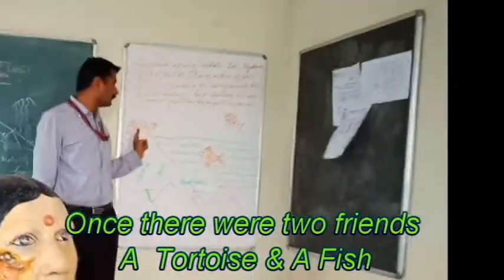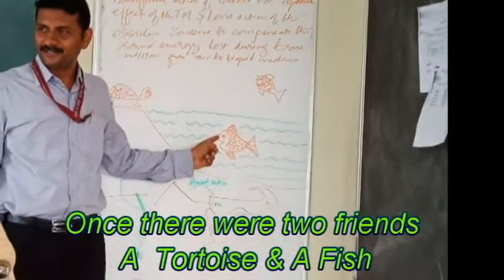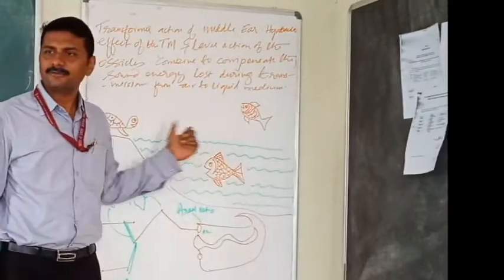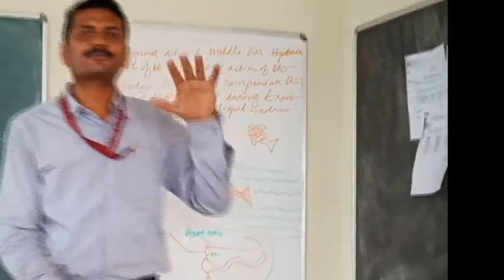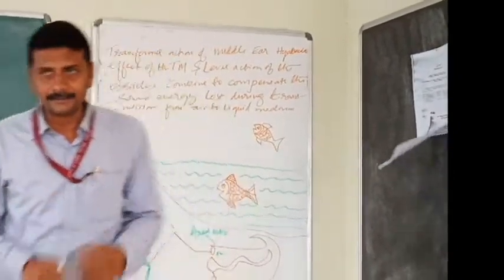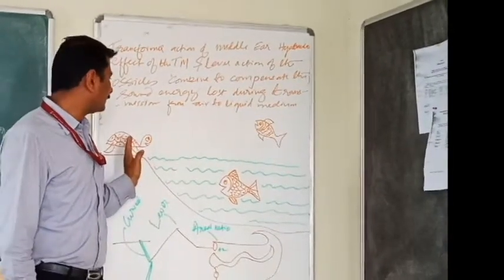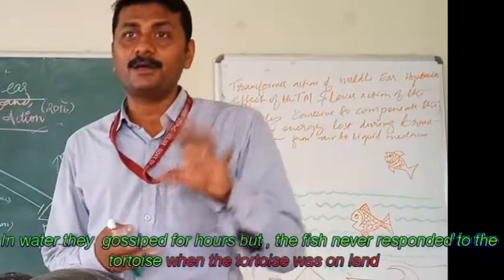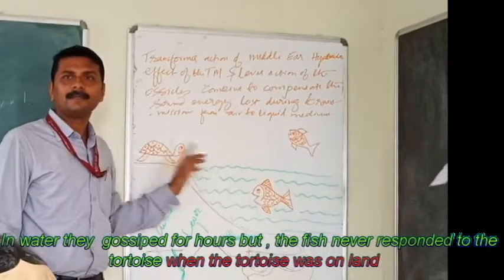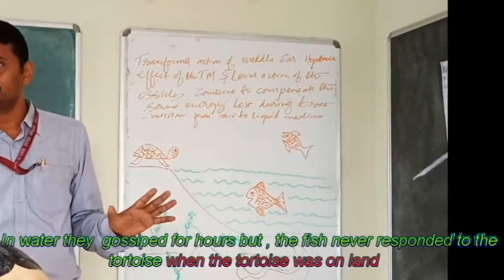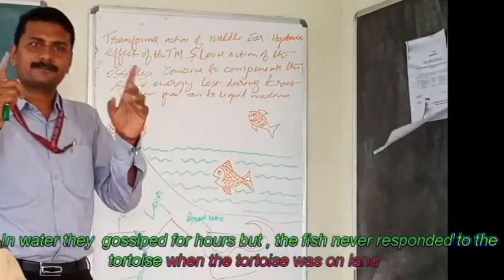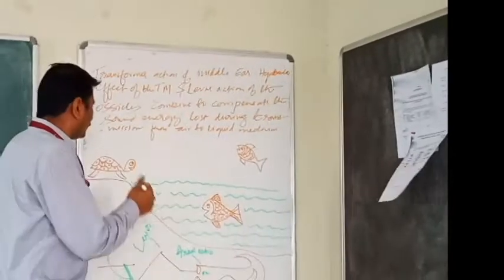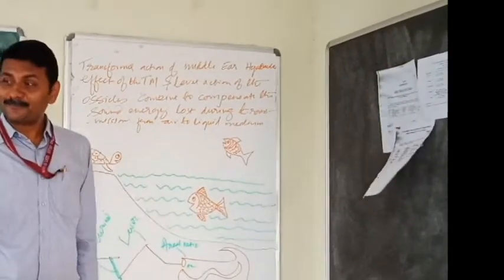There were two friends, a tortoise and a fish. The fish lived inside the water and sometimes jumped out. The tortoise lived inside as well as could come out of the water. But every time the tortoise wanted to talk to the fish when the tortoise was outside the water, the fish did not respond. When the tortoise was inside the water the fish responded, but when outside — no response. So they analyzed the problem and called a physicist.